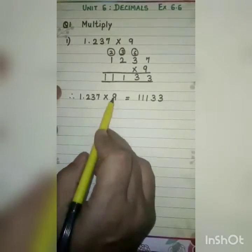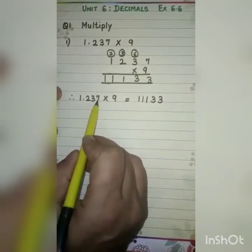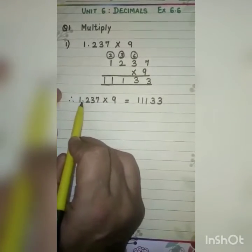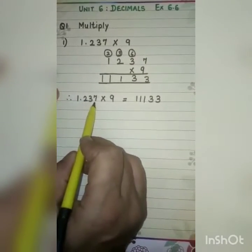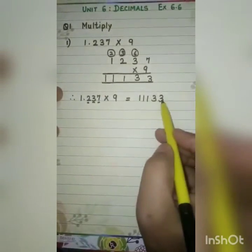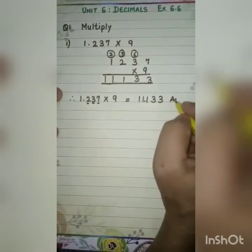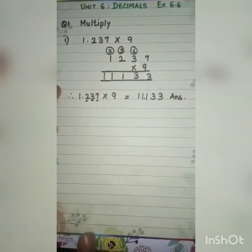Now we have to put the decimal. From the back side, count how many digits we have to cross to reach the decimal: 1, 2, and 3. So from the back side, 1, 2, and 3, then put the decimal. This becomes the complete answer: 11.133.